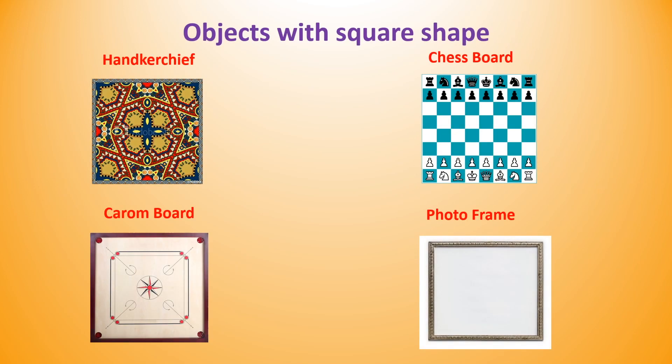Routinely, we see ten to ten square-shaped objects in our surroundings. Anchor chip, chess board, carom board, photo frame are few of them.